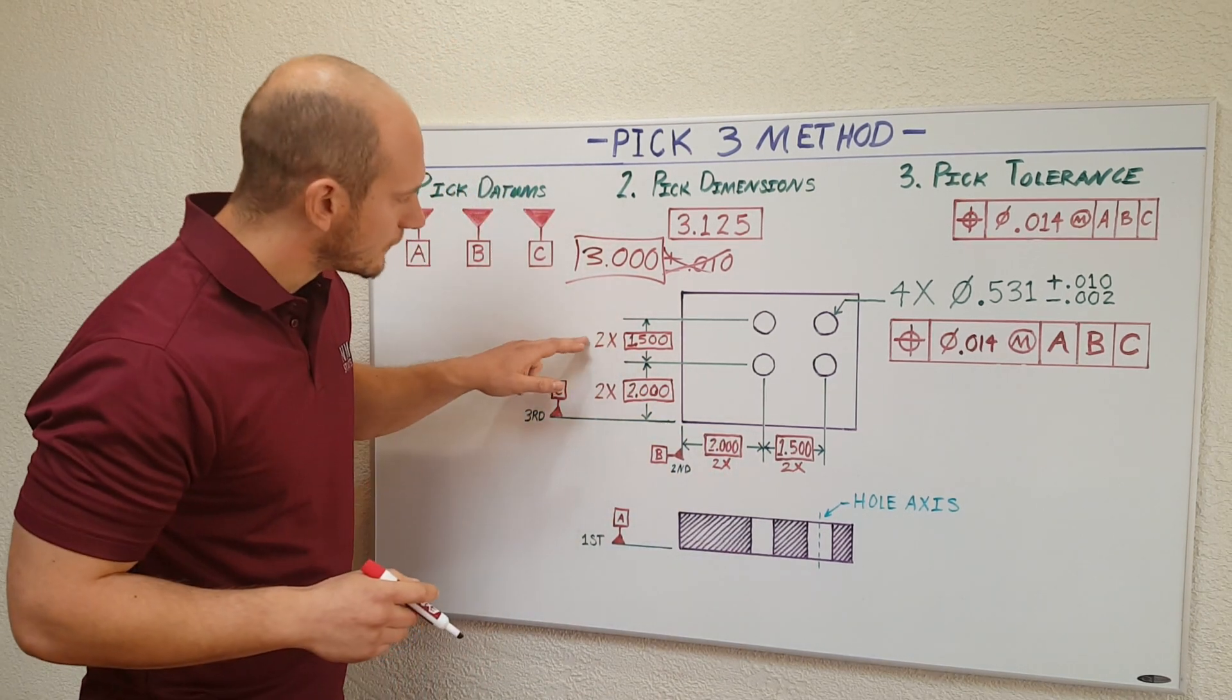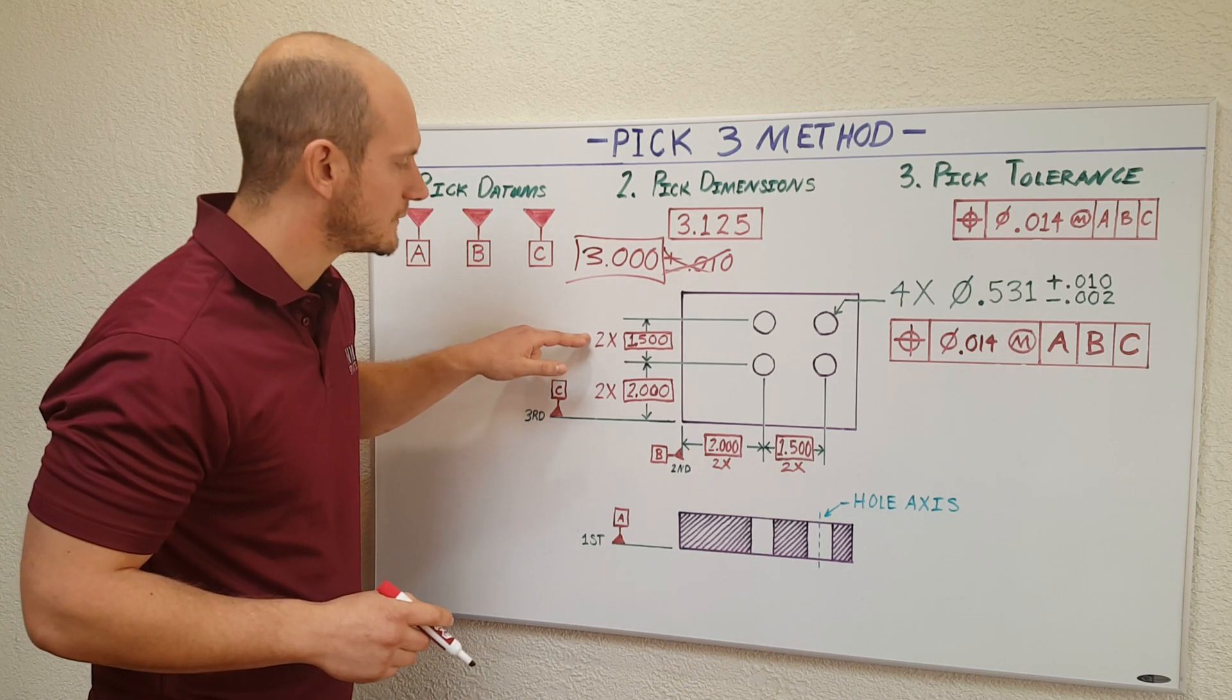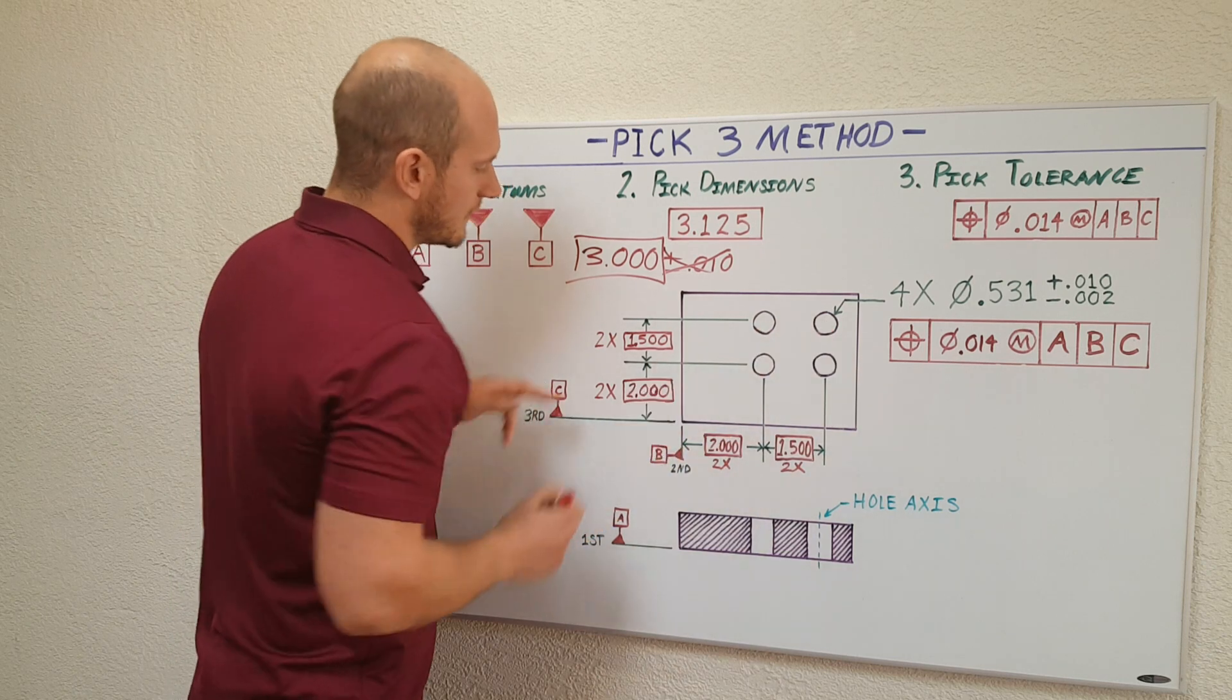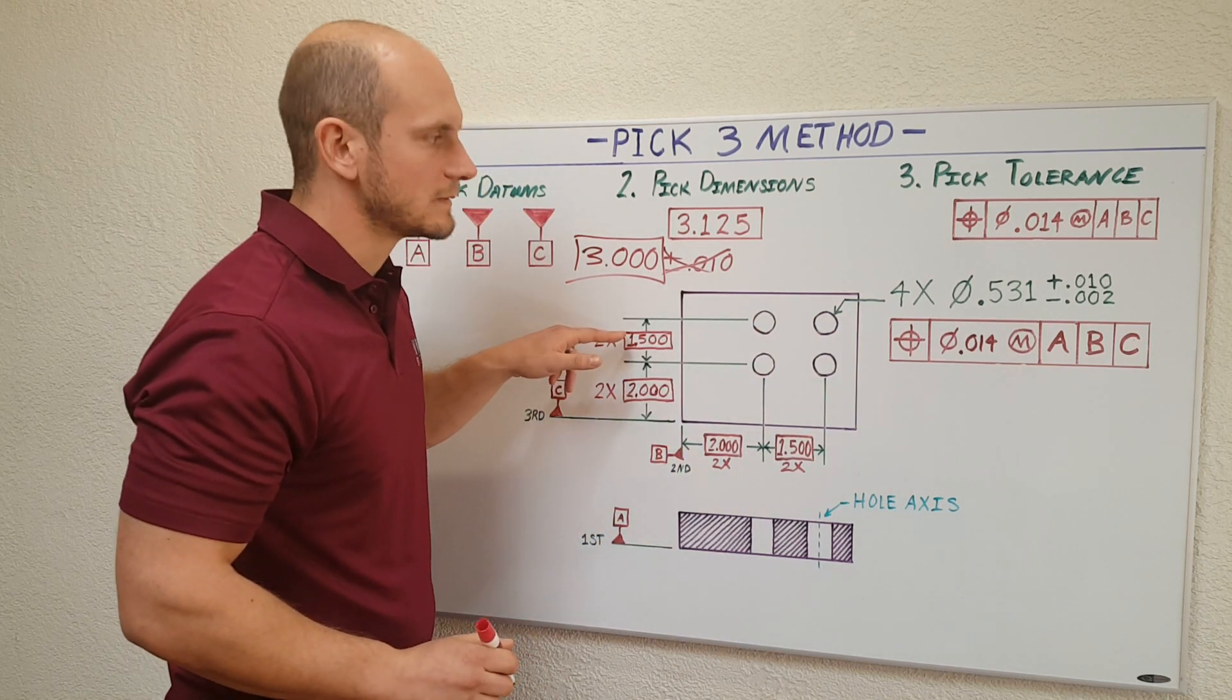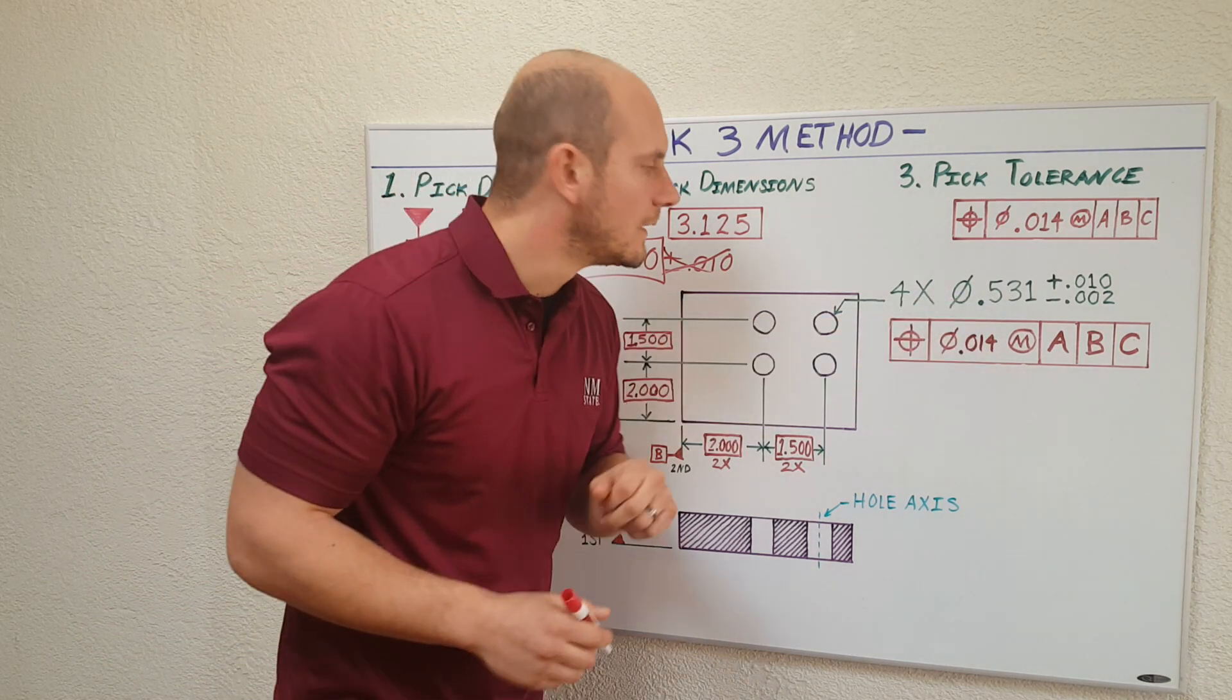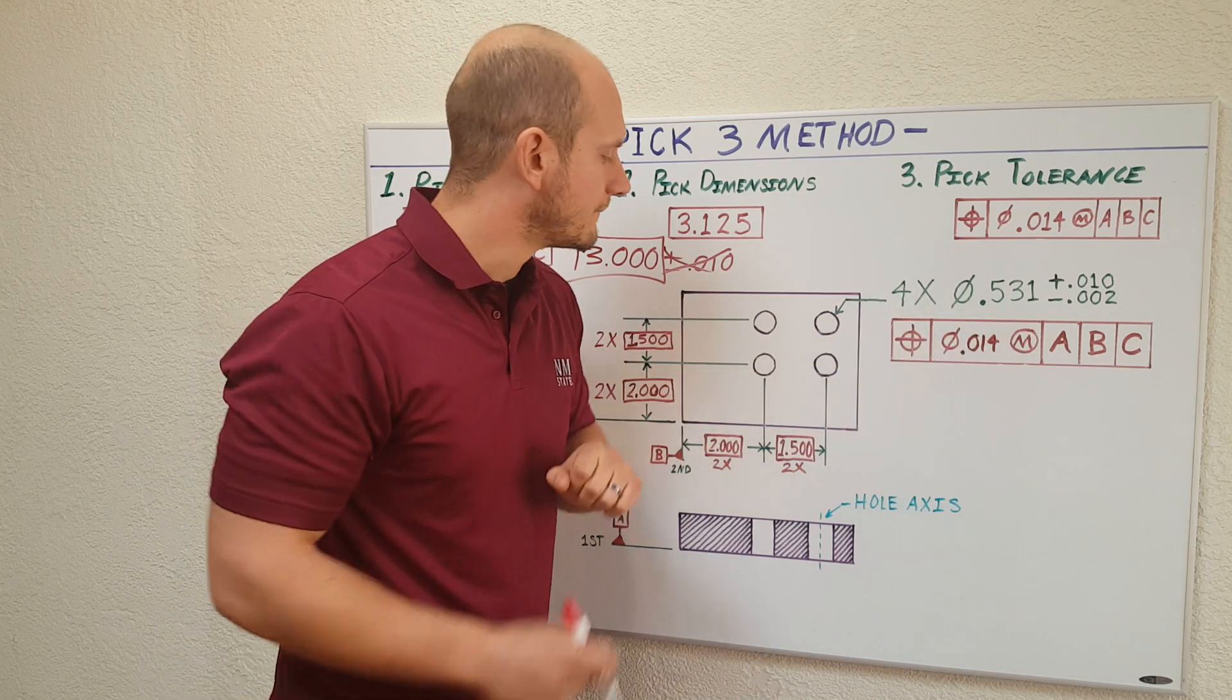One thing I want to touch on really quickly, notice I have a 2x next to each distance dimension. All I'm doing is telling the machinist, I have two features that I'm locating for each of those distance dimensions. The other one, 4x on this hole size. I'm just telling the machinist, I have four holes here and I want to apply this call out to it.